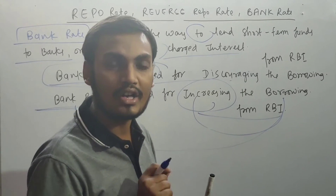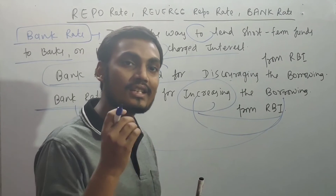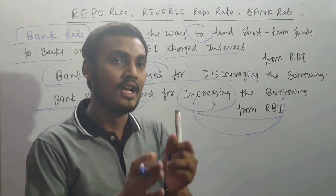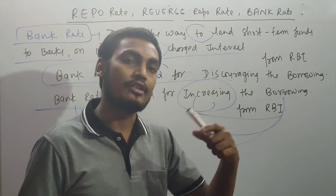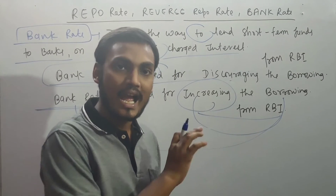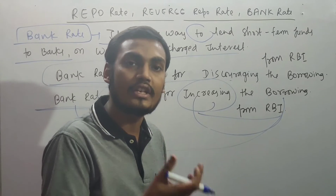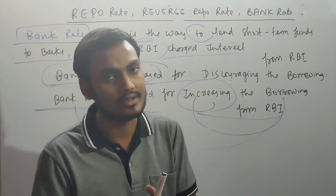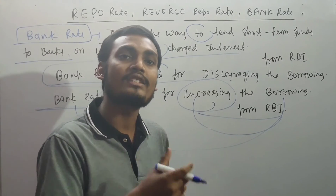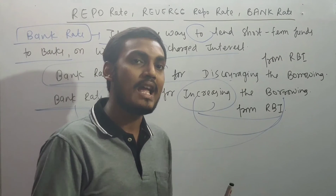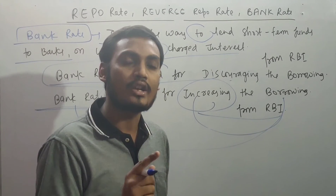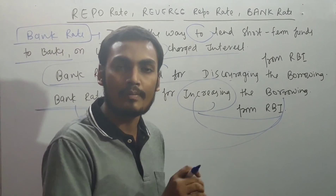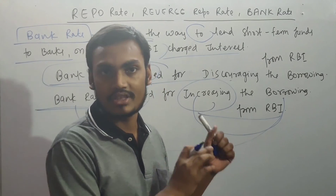The Monetary Policy Committee is a six-member committee headed by the RBI Governor. There are three members from the government side and three from the RBI, including the RBI Governor as head. The main job of the MPC is to define and adjust the benchmark interest rate as required, and importantly, to maintain the inflation rate at 4% plus or minus 2%.